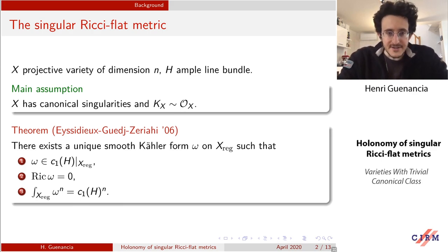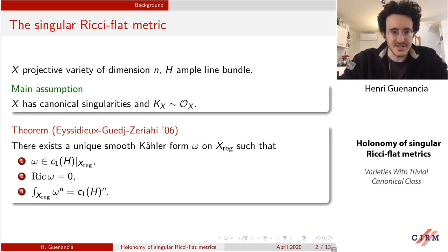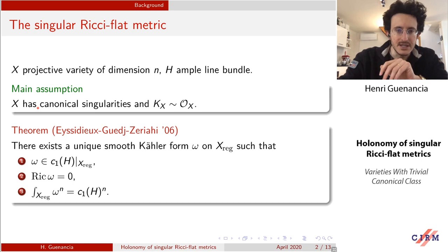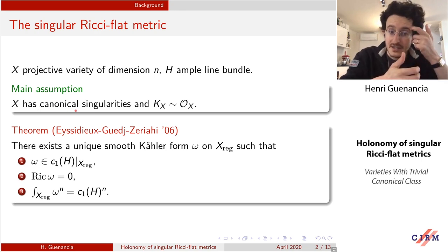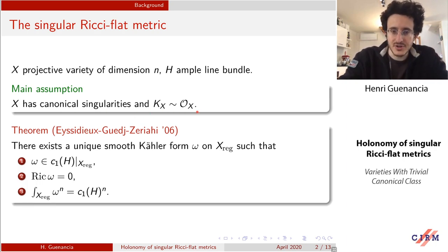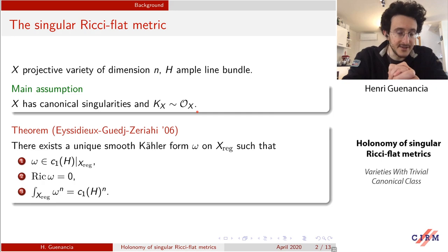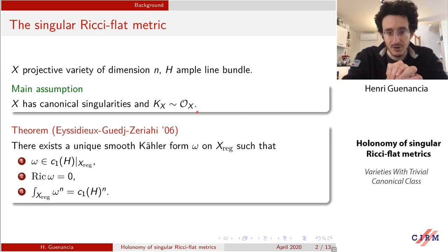We make two main assumptions that are quite restrictive. The first is an assumption on the singularities: we want X to have relatively mild singularities — canonical singularities. The second assumption, quite crucial for the geometry of X, is that KX is trivial, meaning that on the regular part of X we have a global non-vanishing holomorphic n-form.